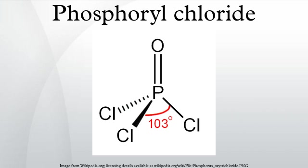Structure: like phosphate, phosphoryl chloride is tetrahedral in shape. It features three P–Cl bonds and one strong P=O double bond, with an estimated bond dissociation energy of 533.5 kJ per mole. On the basis of bond length and electronegativity, the Schomaker–Stevenson rule suggests that the double bond form is very dominant.